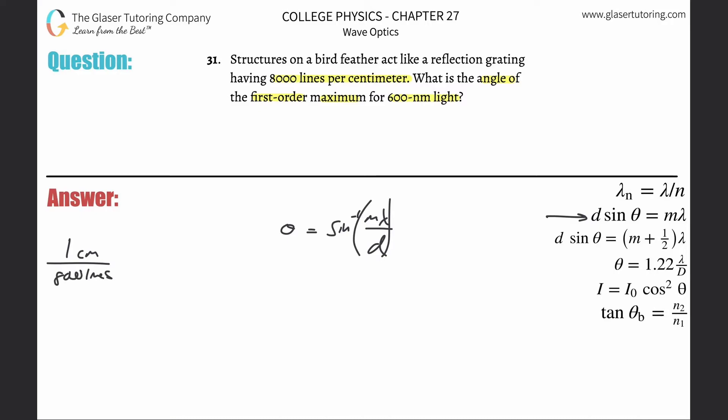When I now do this division, I will get one divided by 8,000, and that is 1.25 times 10 to the minus 4th centimeters per line.